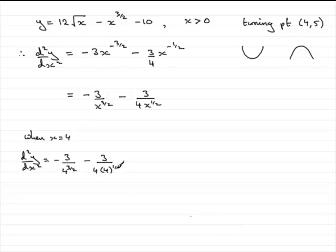Now, you could do this on a calculator if you wish, but really it is very straightforward. We've got -3 over 4 to the power 3/2. In other words, the square root of 4, which is 2, and then cube it. 2 cubed is 8.